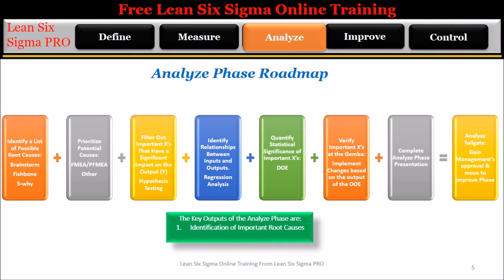The Analyze Roadmap is a summary of all of the steps required to complete the analyze phase. Step 1: Identify a list of all possible root causes — use the brainstorming exercise to identify all possible root causes, group all possible root causes on the fishbone diagram, and use the five whys tool to drive to the final root cause. Visit the gemba and verify root causes. Those factors not found to be present at the gemba should be eliminated.